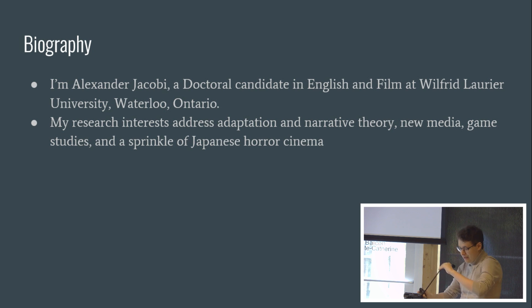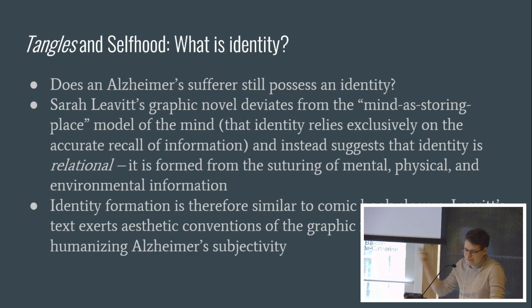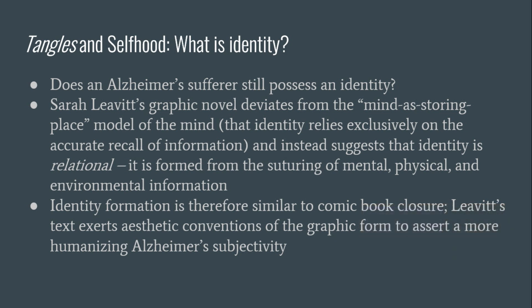What I want to talk about today is the question of how graphic narratives can use their form to discuss questions of identity, and particularly how neurodegenerative diseases impact identity and allow us to question where our personhood is. So where exactly are we in relation to ourselves? Because when discussing neurodegenerative disorders like Alzheimer's, it brings into question where is our identity, and when a disease like this causes our memories and recollections to slip away, can someone that suffers from a condition like Alzheimer's have an identity? What does that even mean?